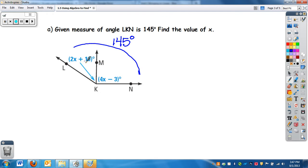So I could say angle LKN, the bigger angle, we can get that by adding up the smaller two angles. So angle LKM plus angle MKN. I'm just going to put in what I know each one is. This is 145, and then we have 2X plus 10 plus 4X minus 3.